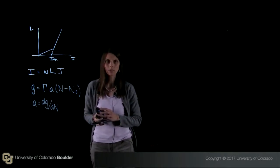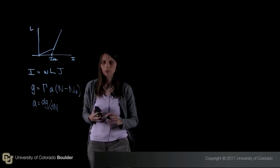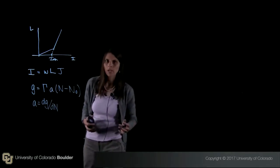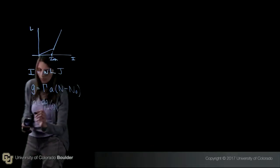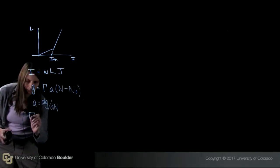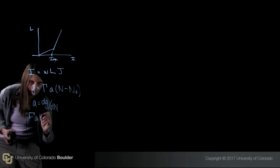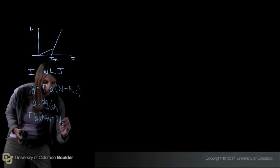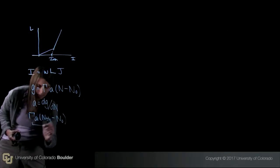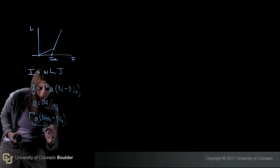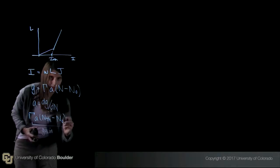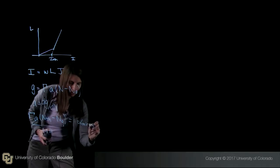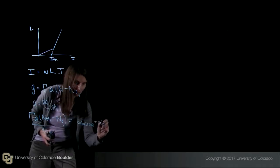So now, let's continue our derivation of the threshold carrier density. We know that at threshold, gain equals loss. And so we can just write down an expression. We have gamma, a, n threshold, because this is the carrier density at threshold, minus n0, so that is my gain. This is equal to the losses, and the losses are alpha mirror plus alpha internal.